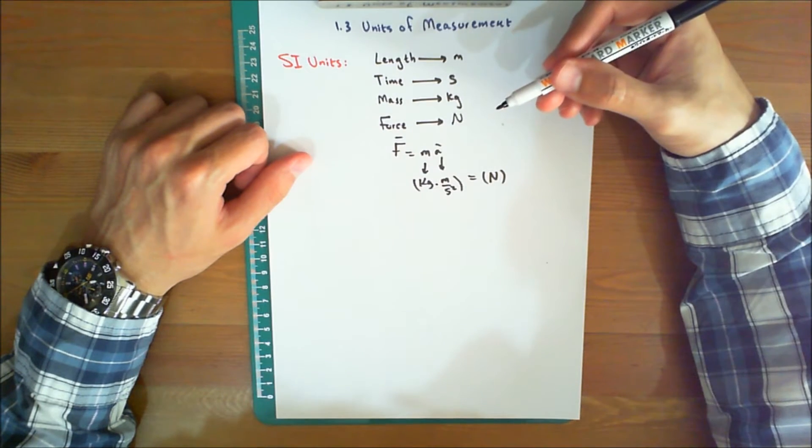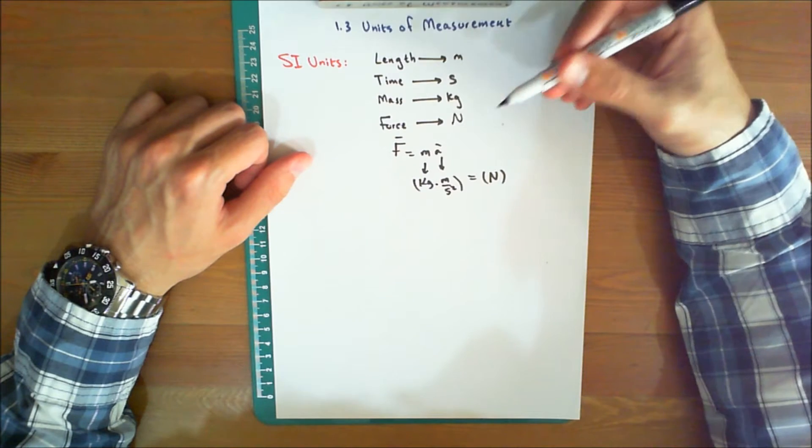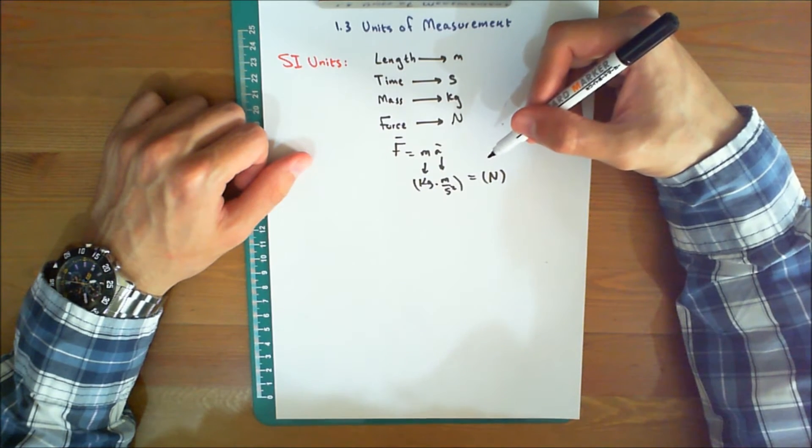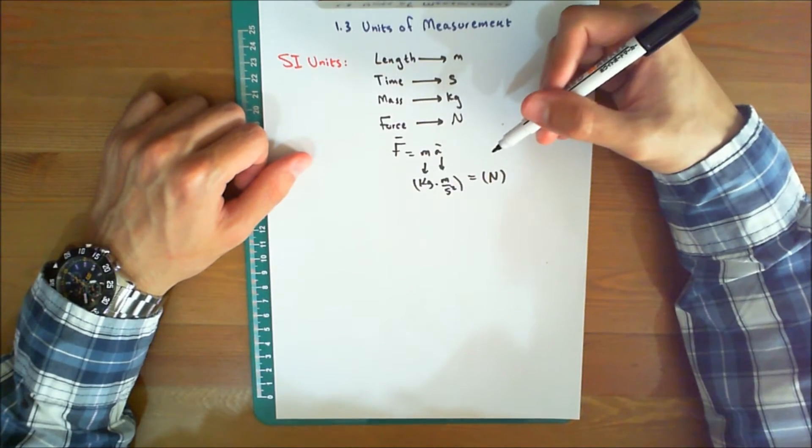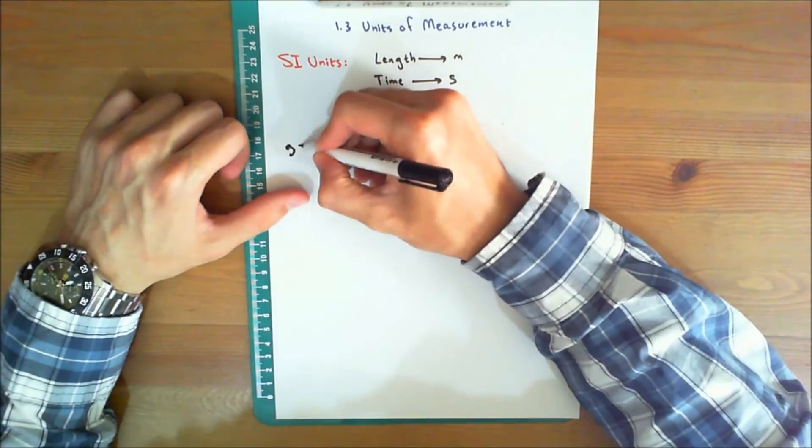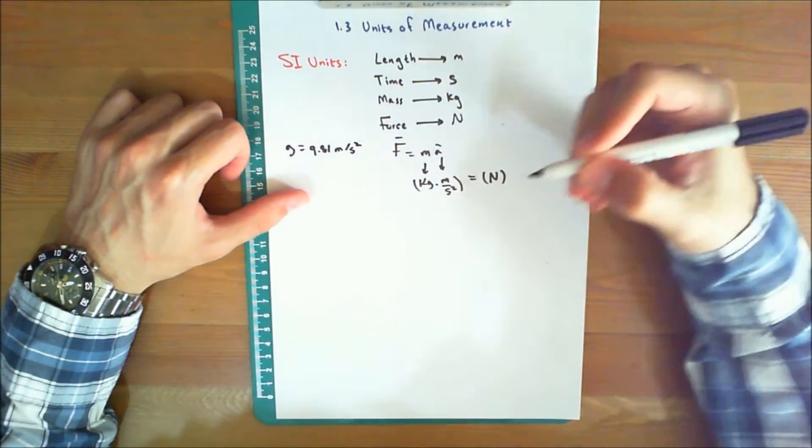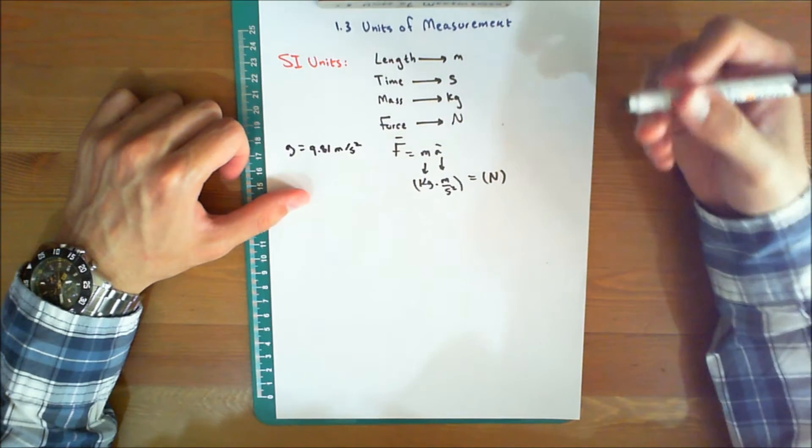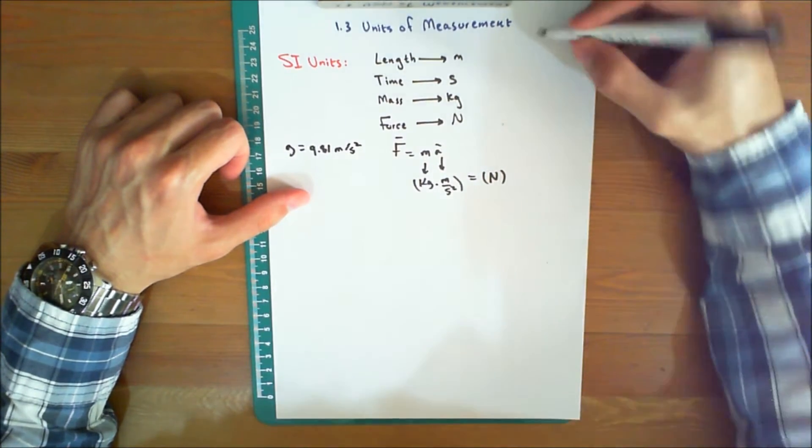If the weight of a body located at the standard location, which is at sea level, is to be determined in newtons, then W equals mg must be applied, the equation presented in the previous video. Here, g would equal 9.81 meter per second squared. Therefore, a body of mass one kilogram has a weight of 9.81 newtons.